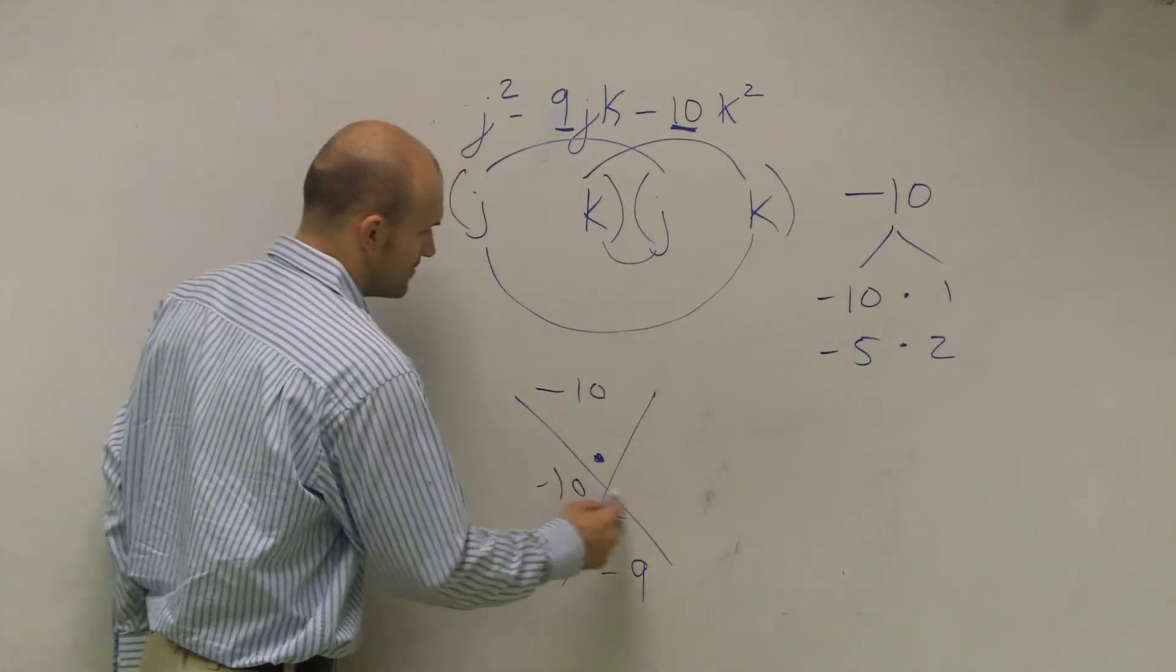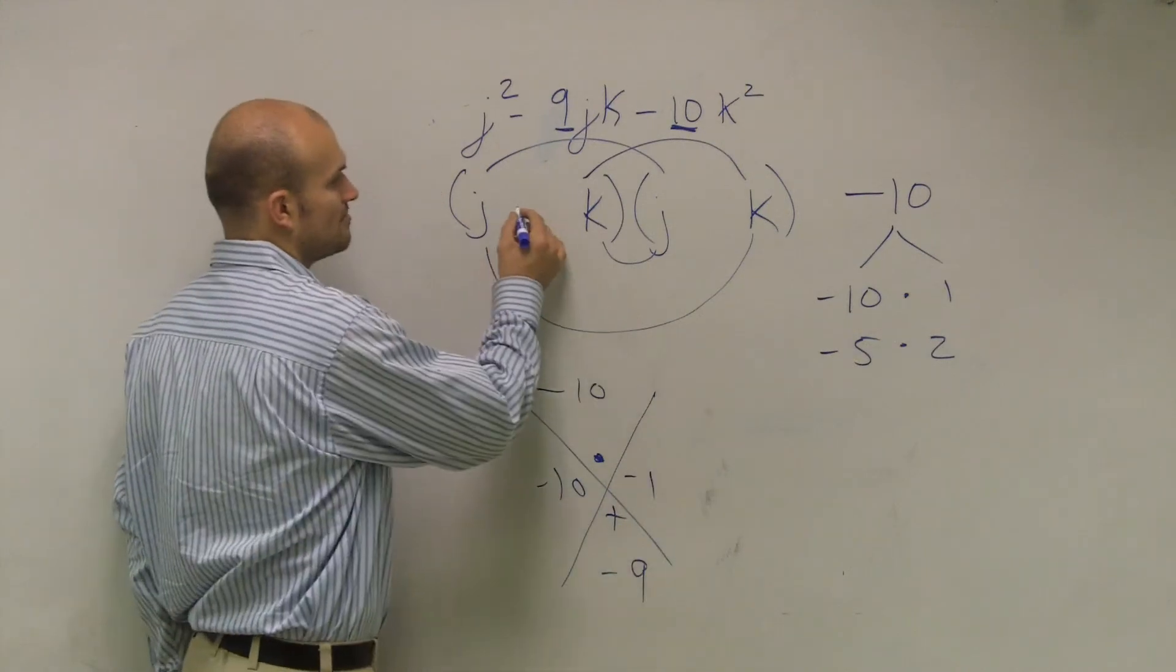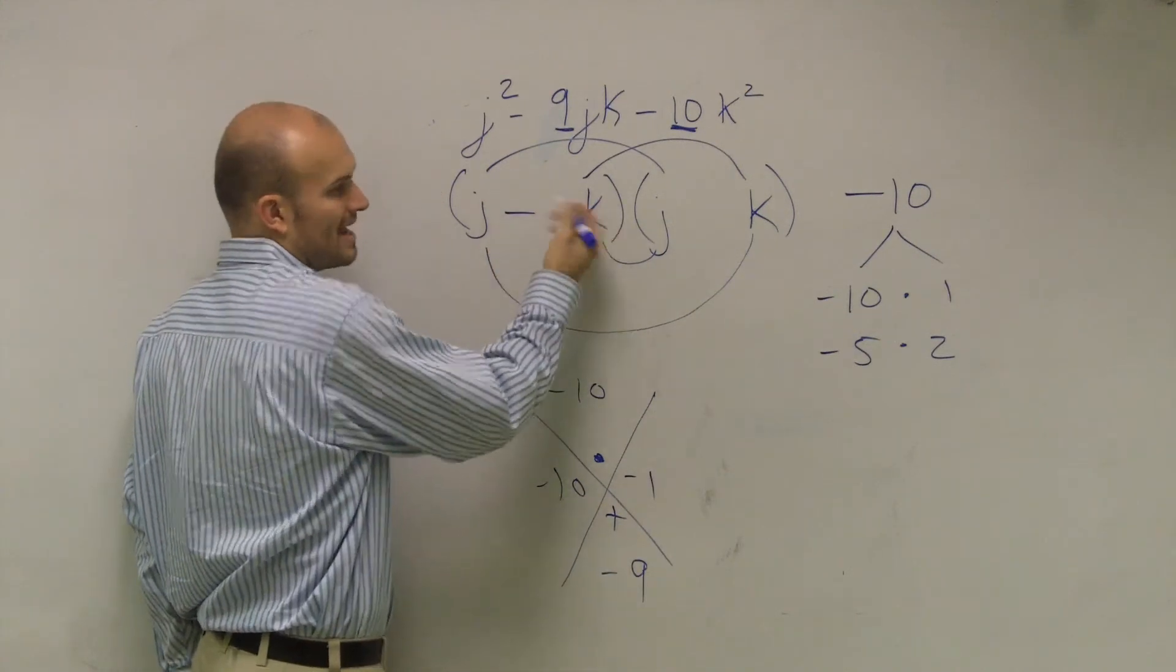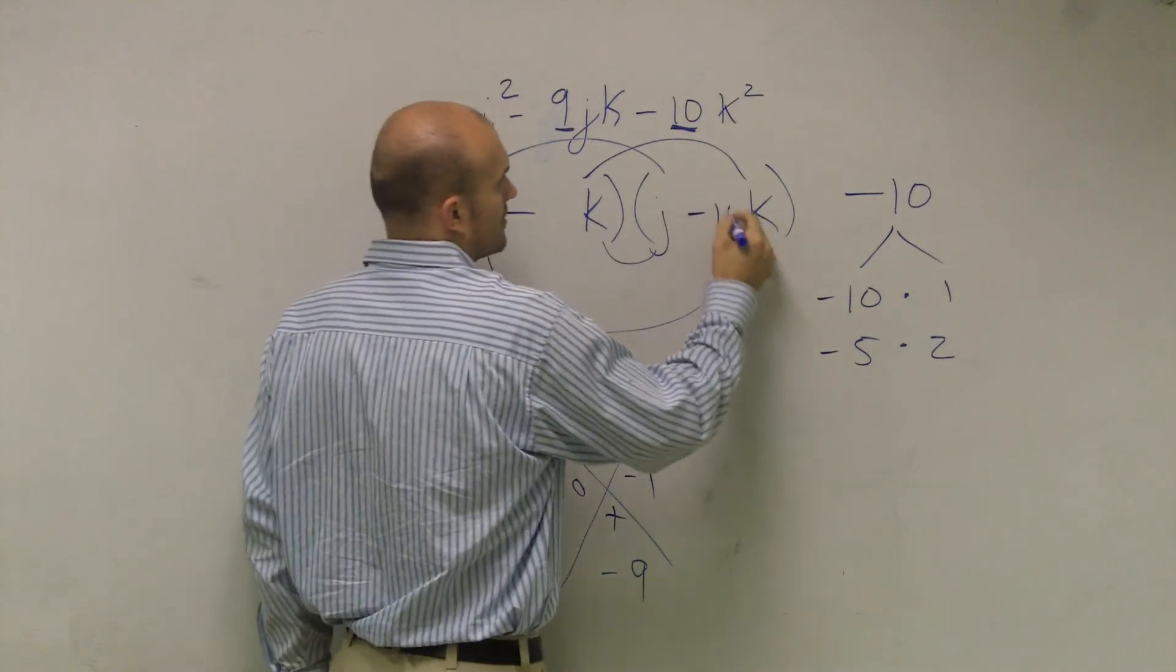So you have negative 10 and 1. So it's minus 1k, which would just be minus k, minus 10k.